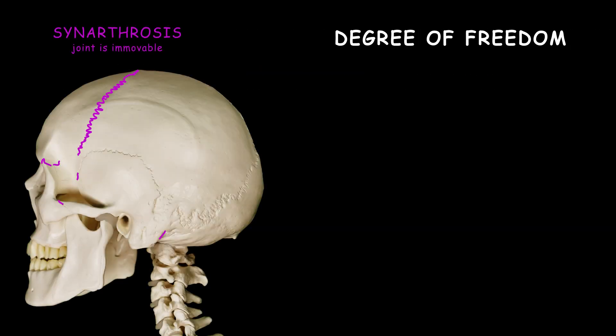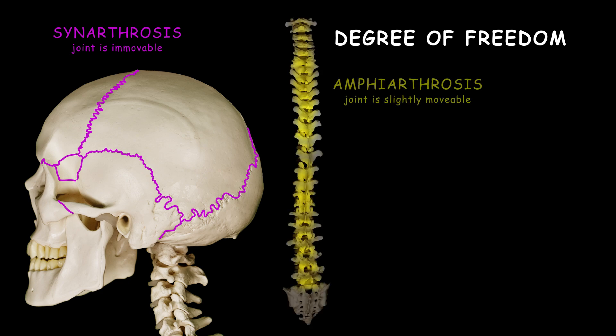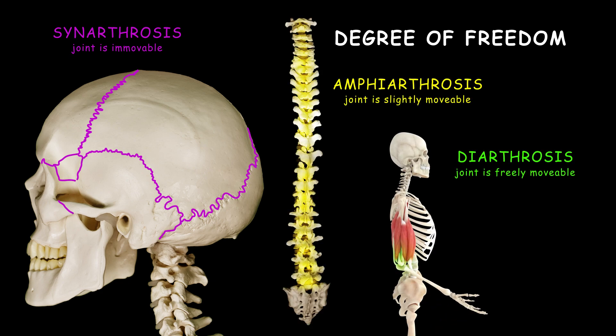The classifications based on degree of movement are the following: synarthrosis if the joint is immovable, amphiarthrosis if the joint is slightly movable, and diarthrosis if the joint is freely movable.